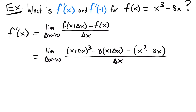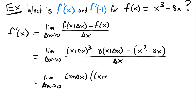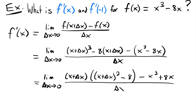Now we can do some simplifying. Rather than completely expanding the cube, I notice a common factor of (x plus delta x) in two terms. I'm going to pull that out to make evaluation easier. We'll have the limit as delta x approaches 0 of (x plus delta x) times [(x plus delta x) squared minus 8], minus x cubed plus 8x, all divided by delta x — distributing the negative to each part.